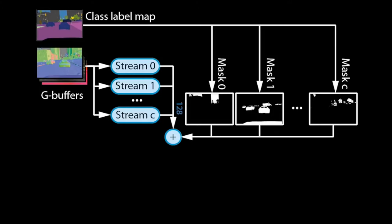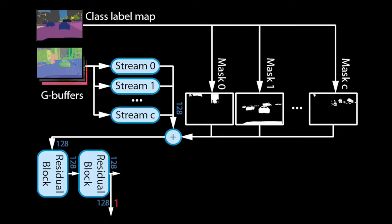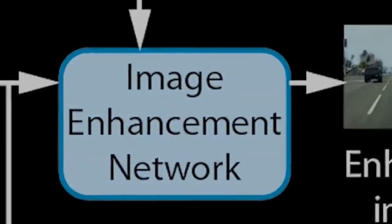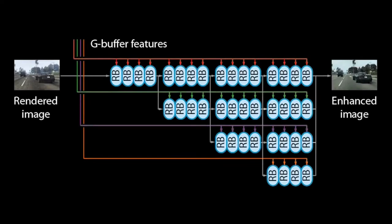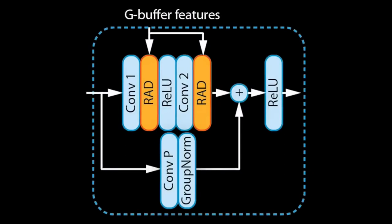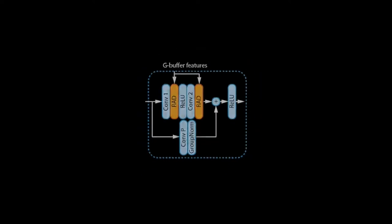The resulting feature tensors are further processed by residual blocks, which output tensors at multiple scales. The Enhancement Network is based on HRNet, which processes images at multiple scales in parallel. Each scale of the feature tensors matches a scale in the network. Within the residual blocks, we replace the batch normalization layers with our own rendering-aware denormalization blocks, or RAD for short. The RAD layers modulate features based on the rendering information in the G-buffer feature tensors. For more details, we refer to our paper.